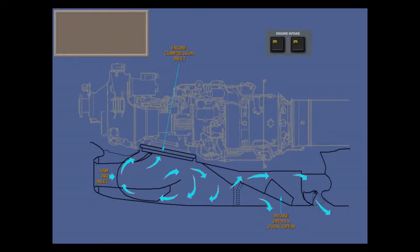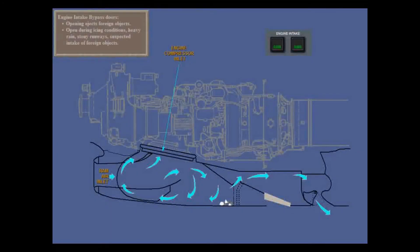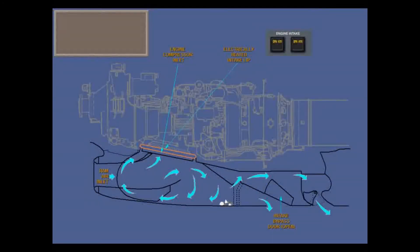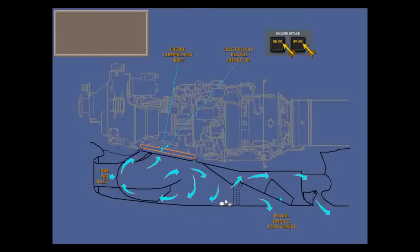You should open the bypass doors when you suspect intake of foreign objects — for example, during icing conditions, in heavy rain, or on stony runways. In flight, the doors are normally closed. When open, the engine intake lip is electrically heated by 115V variable frequency AC, if static air temperature is below plus 10 centigrade on ground, or plus 5 when airborne. Notice the amber heater segments on the engine intake lights on the ice protection panel.